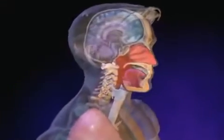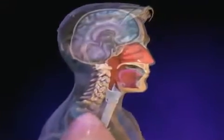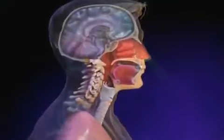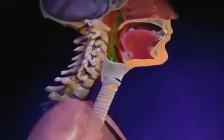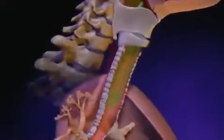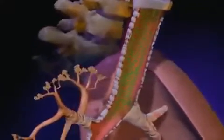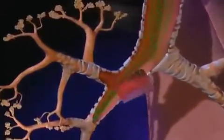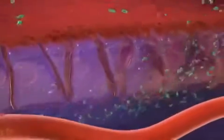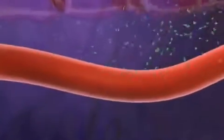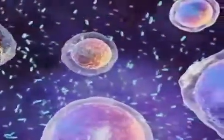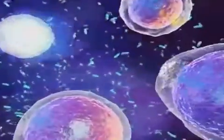An illness can be caused by pathogens — bacteria and viruses that cause disease. These foreign invaders can enter the body in different ways, such as through an open wound, by inhalation, or through contact with mucous membranes of the eyes, nose, or mouth.